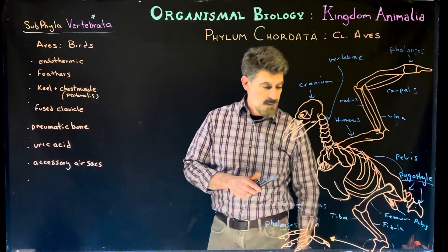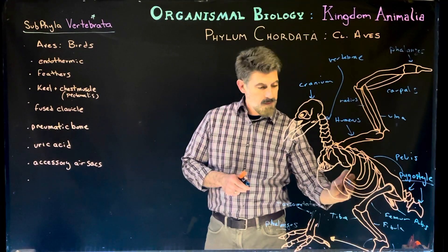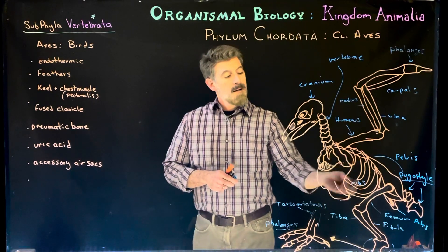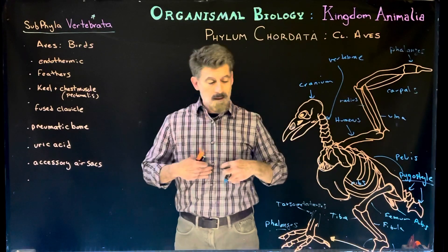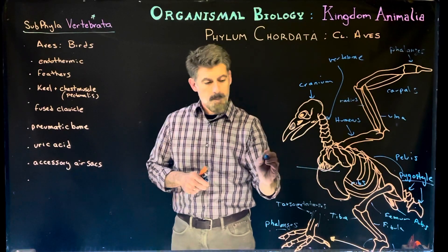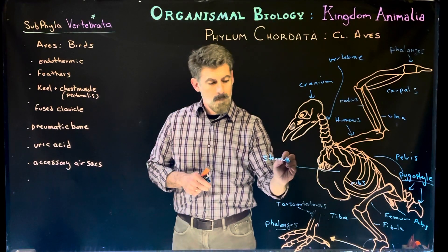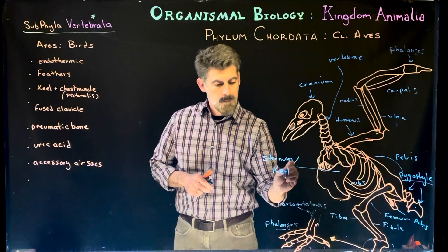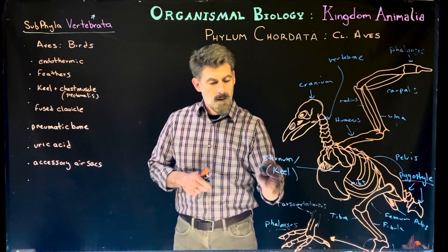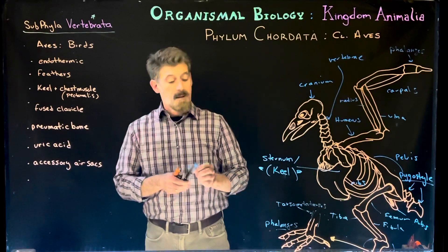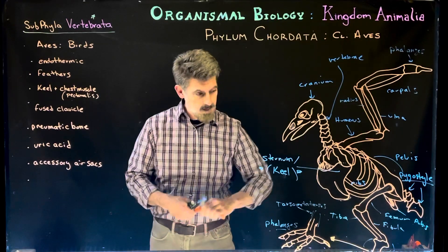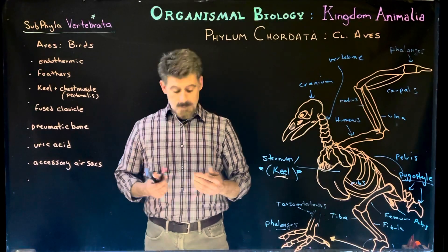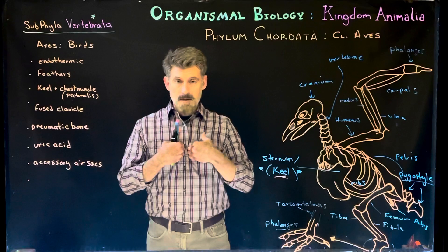Here we have the ribs, and what you'll find is that some of the ribs connect to the sternum, just like our ribs connect to our sternum. But birds are going to have a very important and unique structure that I want to highlight — it's called a keel. Essentially, our pectoral muscles connect to the sternum.